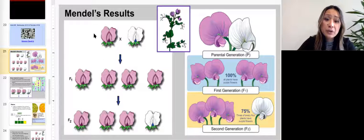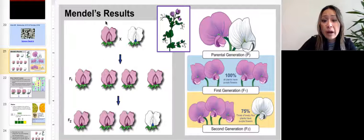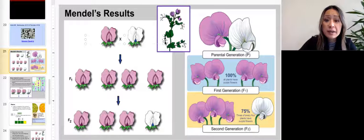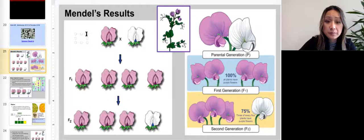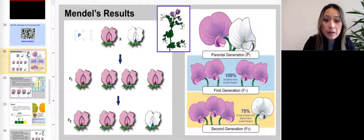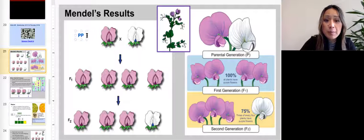And so what we noticed is that if you breed pure bread or pure purple plants with pure white plants. So if I give them genotypes, this could look like this, capital P, capital P.